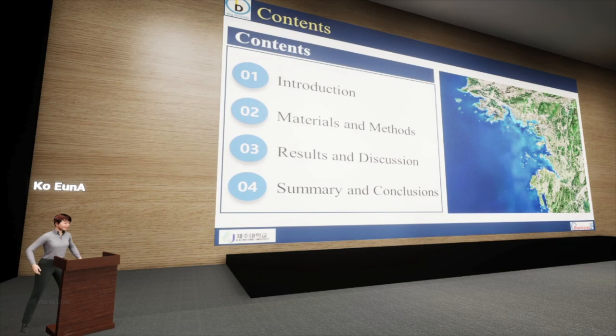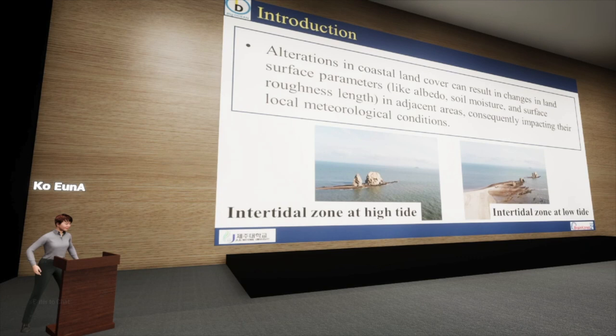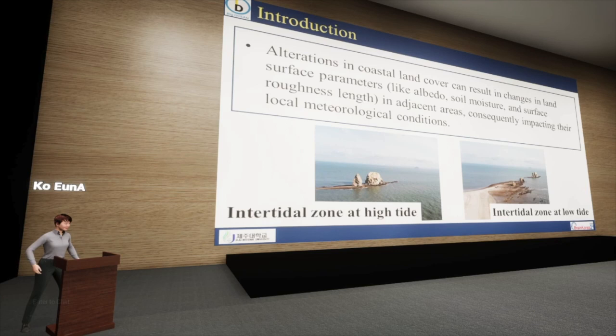A coastal region is an area where the physical properties of the ocean and the interaction between the ocean and land result in a continually changing coastline and land cover type. Alterations in coastal land cover can result in changes in land surface parameters in adjacent areas, and these changes consistently impact local meteorological conditions.